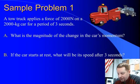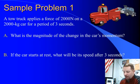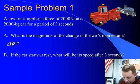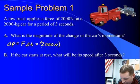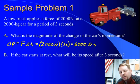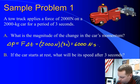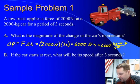In our first problem, a tow truck applies a force of 2,000 newtons on a 2,000 kilogram car for a period of three seconds. First, let's find the magnitude of the change in the car's momentum. The change in momentum equals force times time, which is 2,000 newtons times 3 seconds, giving us 6,000 newton seconds. A newton second is equivalent to a kilogram meter per second, because a newton is a kilogram meter per second squared times a second — the seconds cancel — leaving us with 6,000 kilogram meters per second.